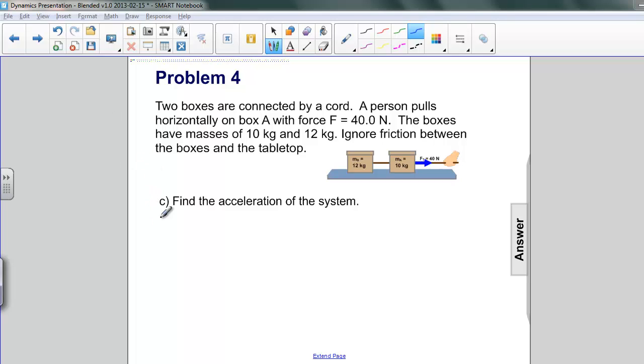Here in this third part of our fourth example, we're asked to find the acceleration of the system. So let's start by listing the information that we have. We have the mass of box A, which is the one at the rear, 12 kilograms. The mass of box B, the one at the front, which is 10 kilograms. And we also know the applied force, let's call it F_app, that's 40 newtons. So how do we find this?